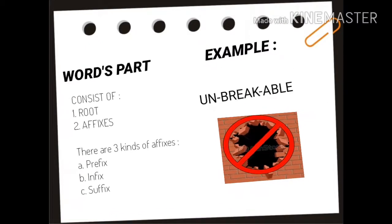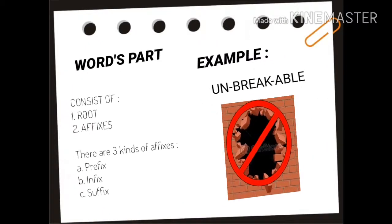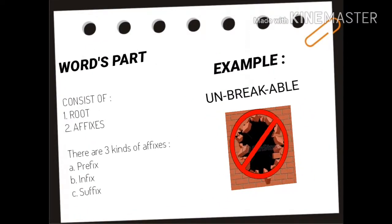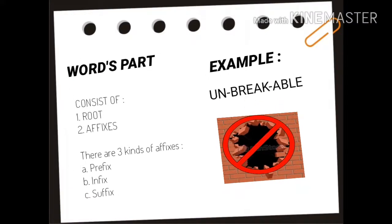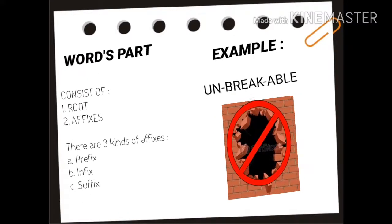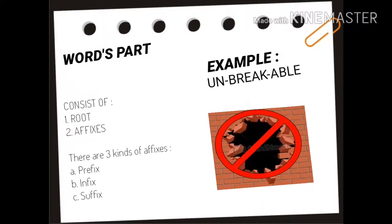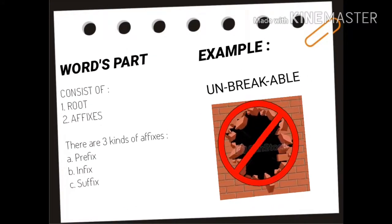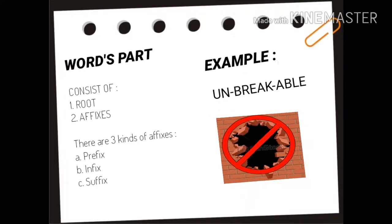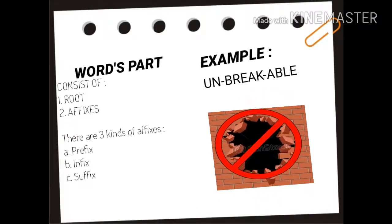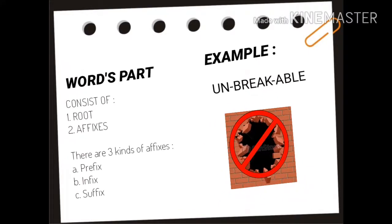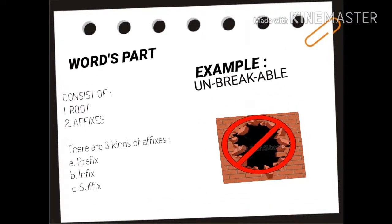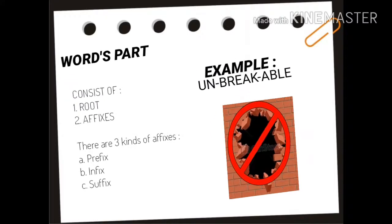Affix is a bound morpheme which will modify the root. There are three kinds of affixes: 1. prefix, in the beginning of the word; 2. infix, in the middle of the word; and 3. suffix, in the ending of the word.